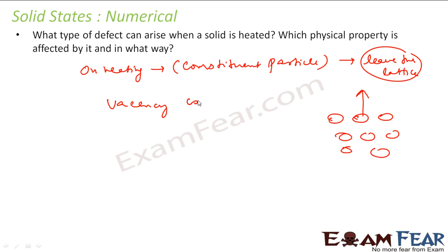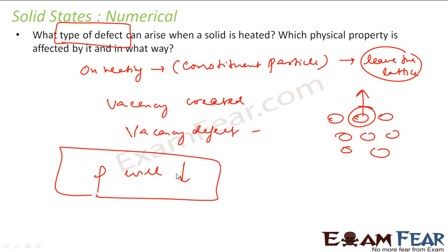So if a vacancy is created, we are talking about vacancy defect. So what kind of defect it creates? The answer is it creates vacancy defect. The next question is which physical property is affected? Obviously, in case of vacancy defect, if these molecules are not there, if there is vacancy here, the density will decrease. So the physical property that is impacted is density, and it will decrease.